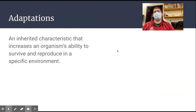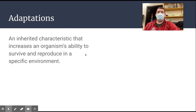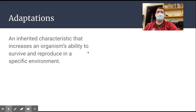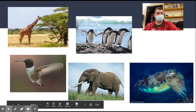This brings us to the idea of adaptations, which help organisms in the process of natural selection and give them higher fitness. An adaptation is an inherited characteristic that increases an organism's ability to survive and reproduce in a specific environment. We've already looked at some adaptations — advantages or characteristics that organisms can inherit.